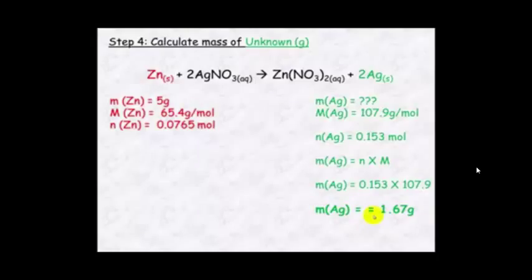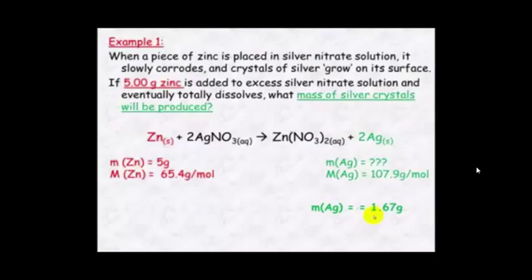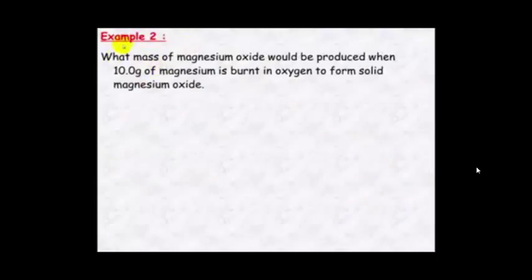I like to check my answers, so we go back to the question and make sure we found the right thing. It's asking for the mass of silver and I've found the mass of silver — correct. Second example: what mass of magnesium oxide would be produced when 10 grams of magnesium is burnt in oxygen to form solid magnesium oxide?